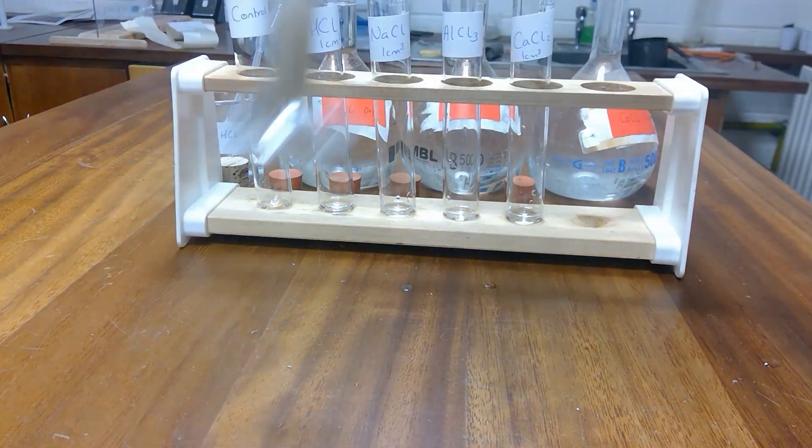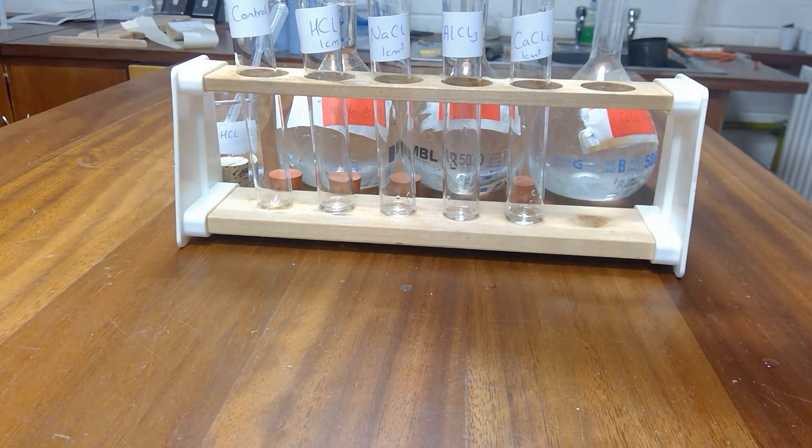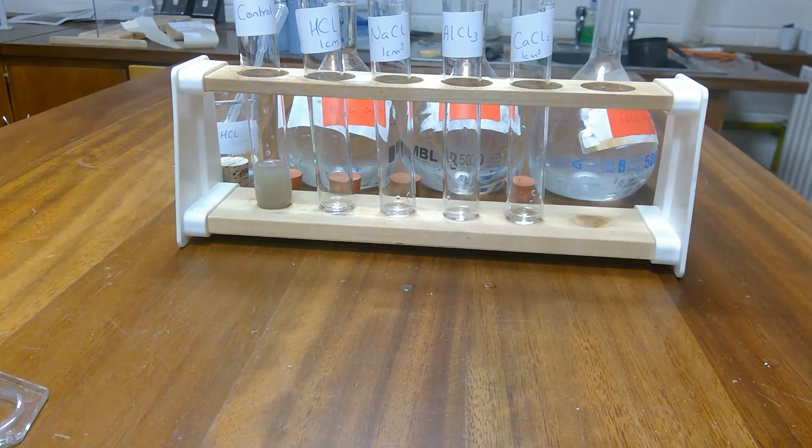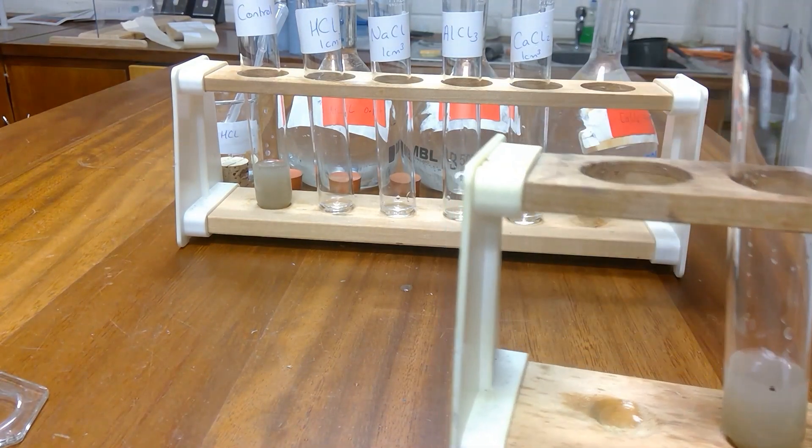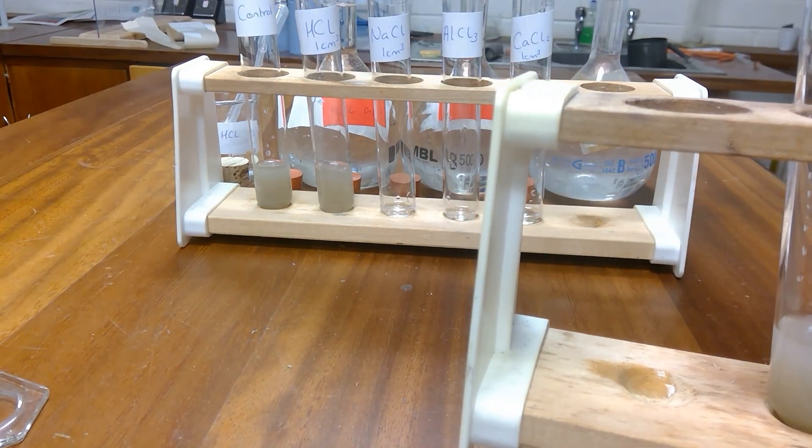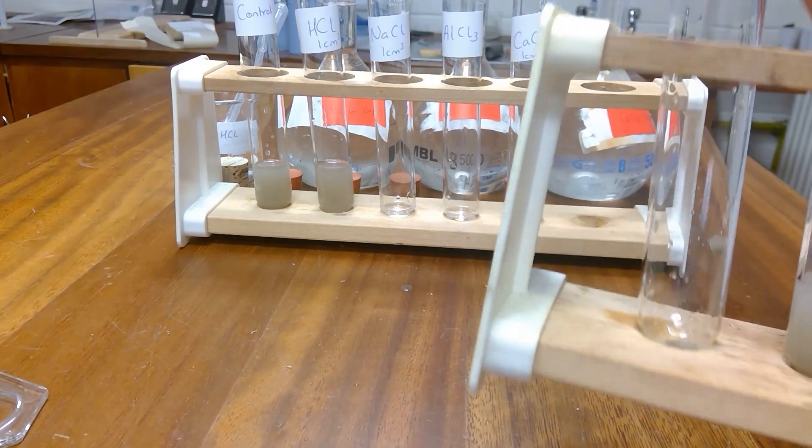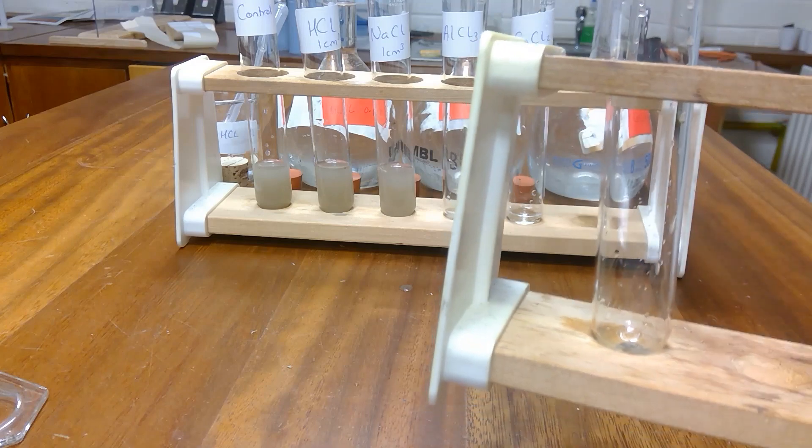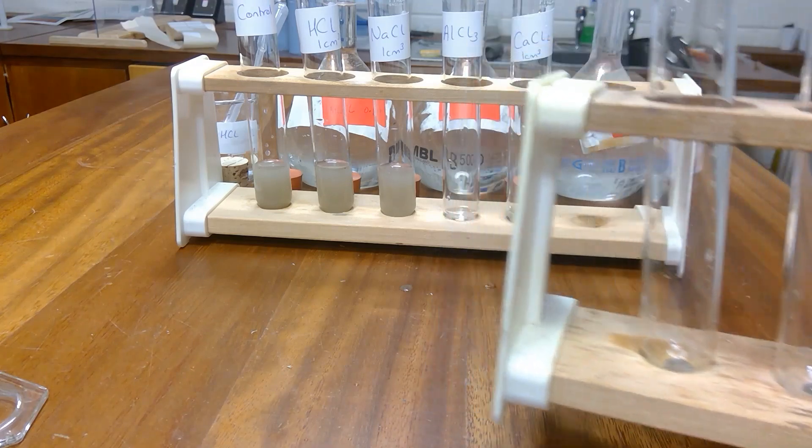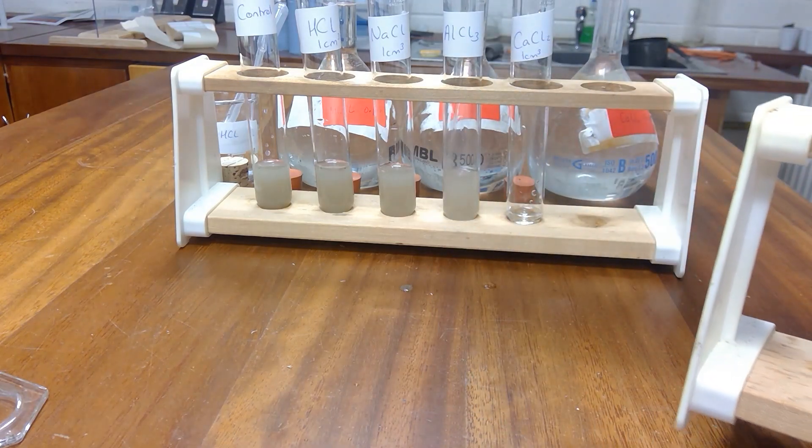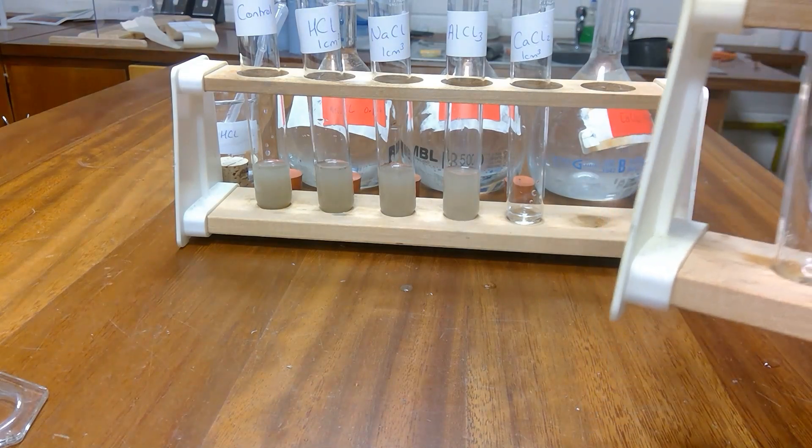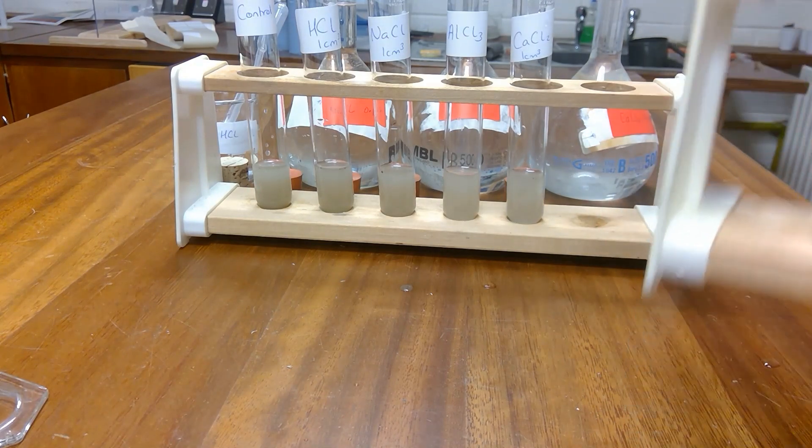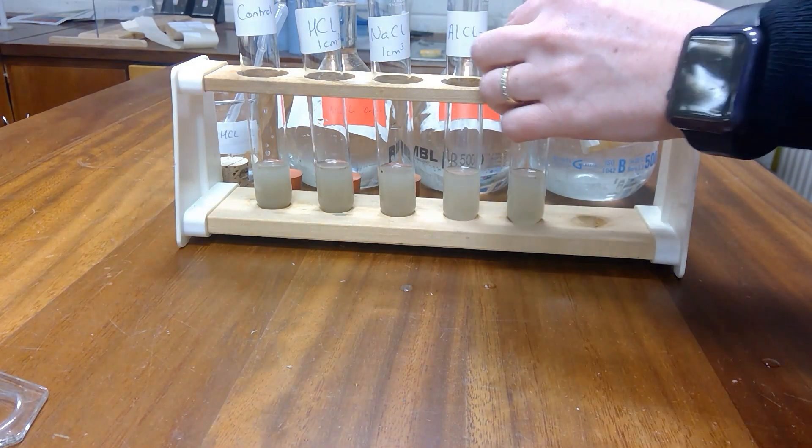So now we've placed the 10 centimetres cubed into the control of our clay soil. And I have some prepared already. 10 centimetres cubed of the hydrochloric acid. 10 centimetres cubed into the sodium chloride. 10 centimetres cubed into the aluminium chloride. And 10 centimetres cubed into the calcium chloride. And we'll put the stoppers on each.